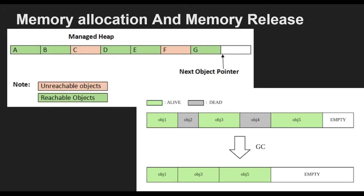Coming to the memory release. The garbage collector's optimizing engine determines the best time to perform collection based on the allocations being made. When the garbage collector performs a collection, it releases the memory for objects that are no longer being used by the application. It determines which objects are no longer being used by examining the application's roots. An application's roots include static fields, local variables on a thread stack, CPU registers, GC handles, and the finalized queue. Each root either refers to an object on the managed heap or is set to null. The garbage collector can ask the rest of the runtime for these roots. Using this list, the garbage collector creates a graph that contains all the objects that are reachable from the roots.